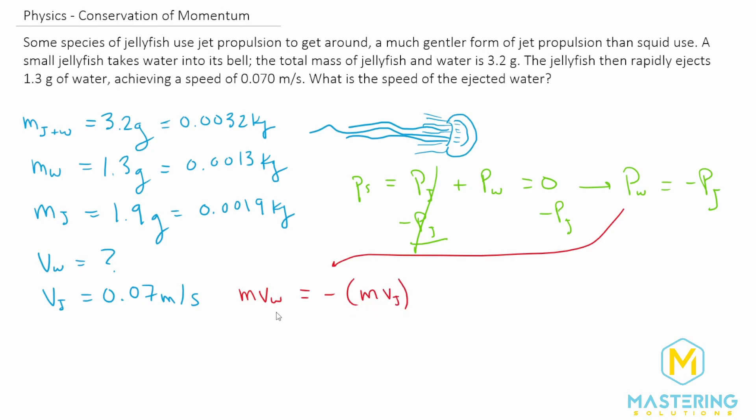We're trying to find the final velocity of the water, of course. So let's divide both sides of the equation by the mass of the water. And if we come up here, now we have the final velocity of the water is equal to the negative mass of the jellyfish divided by the mass of the water, all multiplied by the velocity of the jellyfish.